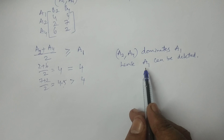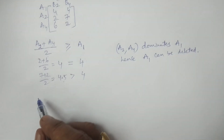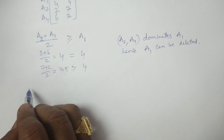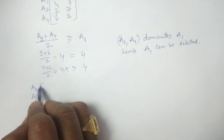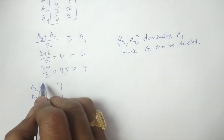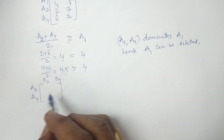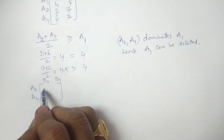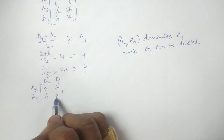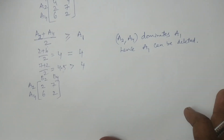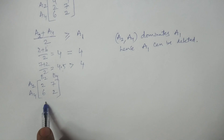A1 is now deleted. The remaining reduced payoff matrix has Player A with strategies A2 and A4, and Player B with strategies B2 and B4. The 2×2 matrix values are: A2: 2, 7; A4: 6, 2. This has been reduced to a 2×2 payoff matrix.